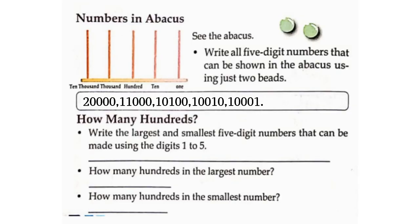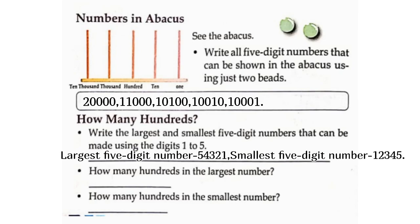How many hundreds? Write the largest and smallest five-digit numbers using digits 1 to 5. Largest five-digit number: 54,321. Smallest five-digit number: 12,345. How many hundreds in the largest? 543 hundreds. How many hundreds in the smallest? 123 hundreds.